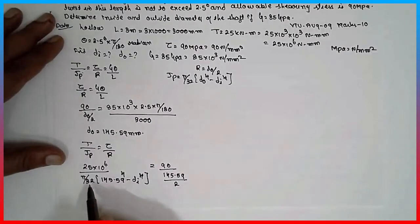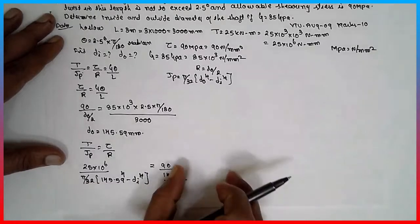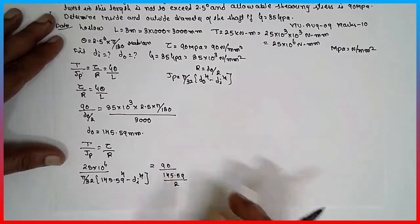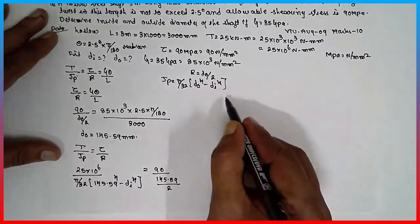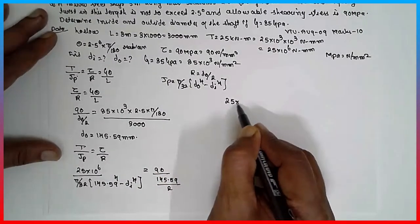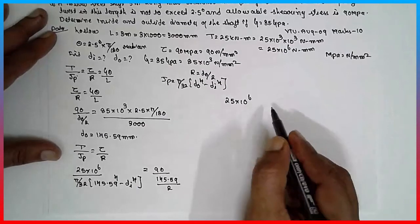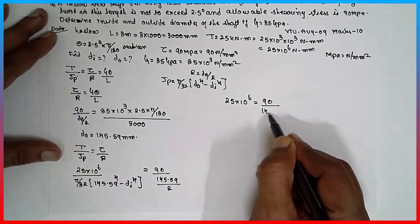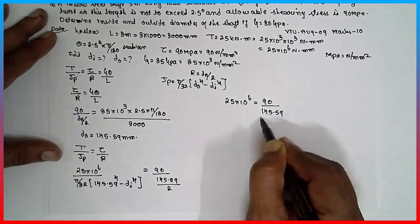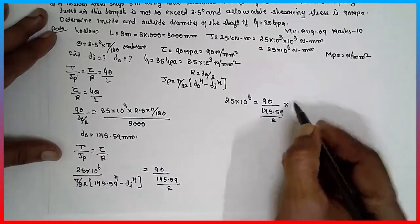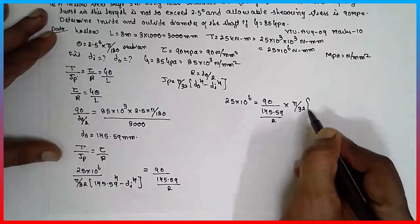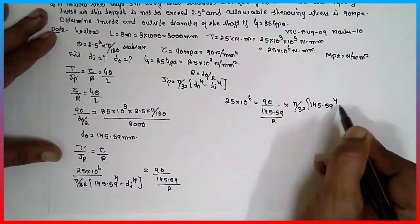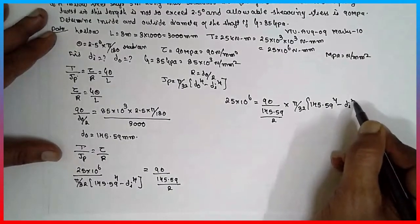Now, how to solve here? Bring this entire section here. If the unknown is bottom, please make it on the top. You know how to find out the unknown. 25 into 10 raise to 6, D naught raise to 4 minus D_i raise to 4.